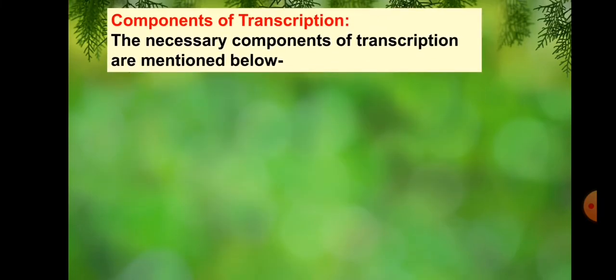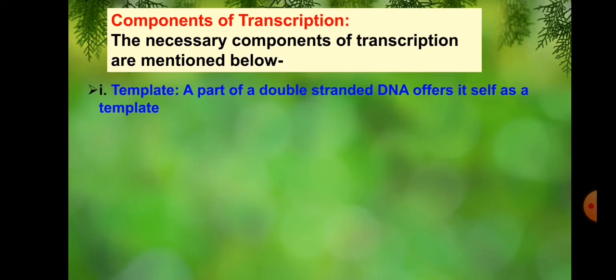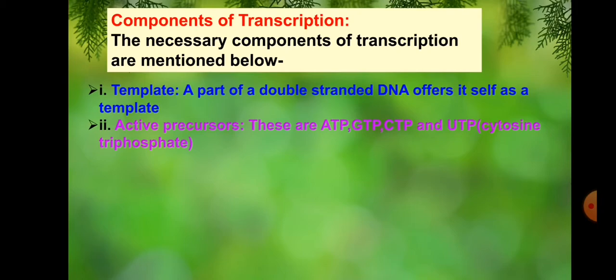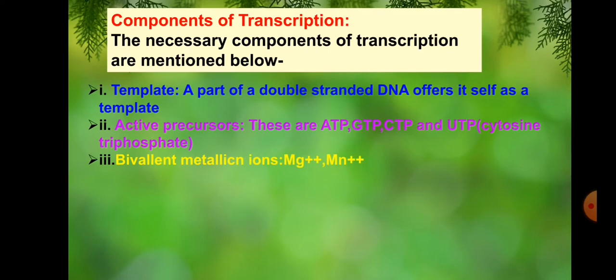Components of transcription. The necessary components of transcription are mentioned below. First, a template: a part of double-stranded DNA offers itself as a template. Second, active precursors: these are adenosine triphosphate, guanosine triphosphate, cytosine triphosphate, and uracil triphosphate. Third, bivalent metal ions: magnesium and manganese. Fourth, RNA polymerase enzyme.